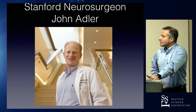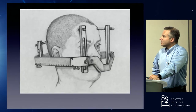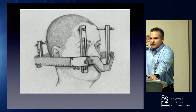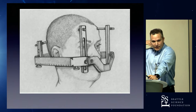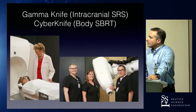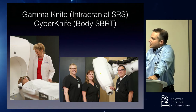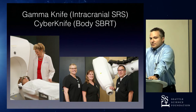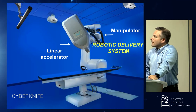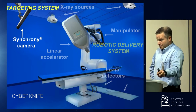Then along came John Adler, who basically said: wouldn't it be cool if I could invent something that didn't require putting a frame on every morning? Also, the Gamma Knife is limited to the brain because of the way the helmet is — you can treat C1 but not much further. If you develop something with a robotic arm, you could treat the spine and other areas, and patients could just come in, get their treatment, and walk off. This is the CyberKnife — the only one in the city of Seattle is downstairs on A-level.